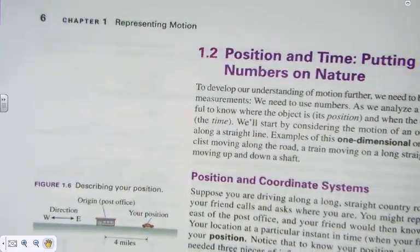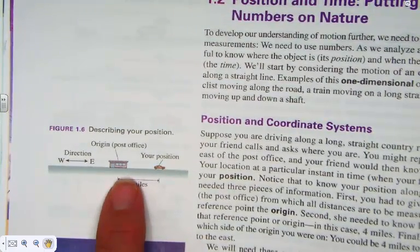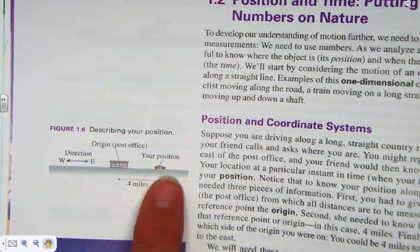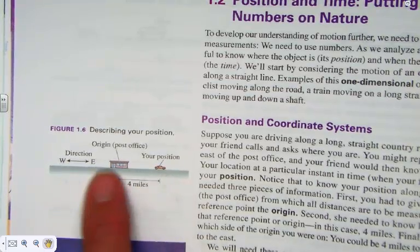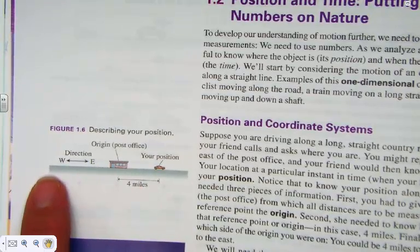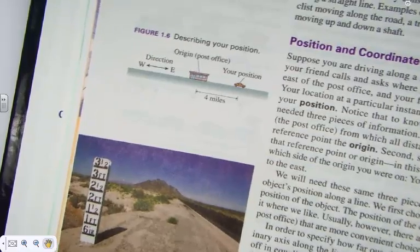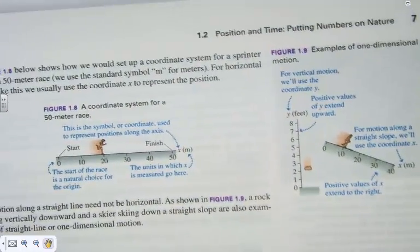And that might be further clarified if you study this picture in our text. If the post office is the origin, if your position is in the positive direction, you're heading east. If it's in the negative direction, you're heading west. The sign is convention to let us know direction, not to tell us that the actual distance is of negative value.